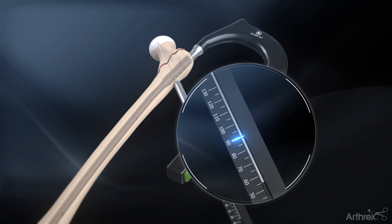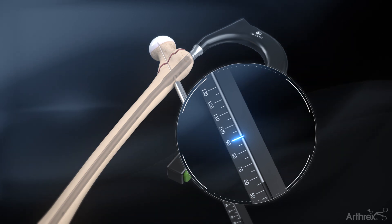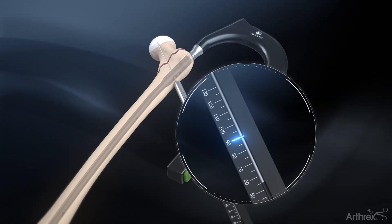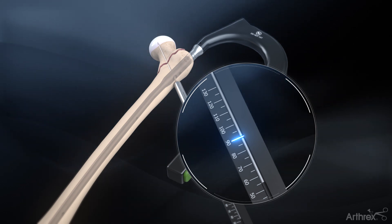The guide pin is measured to the tip, so at least 5 to 10 mm should be subtracted from the measurement when determining drilling depth and lag screw length selection. Other factors, such as fracture reduction, nail position, and anticipated fracture compression should be accounted for.